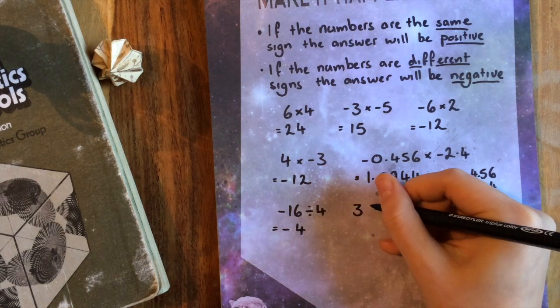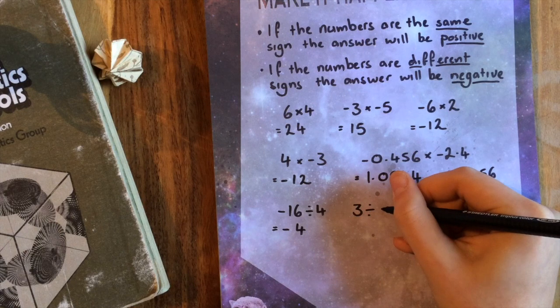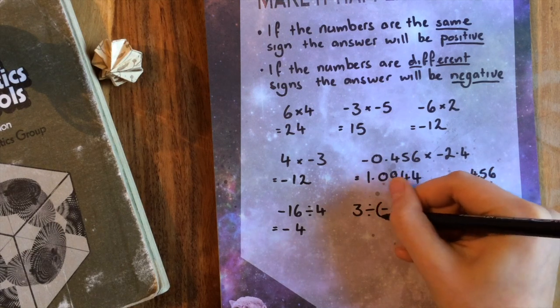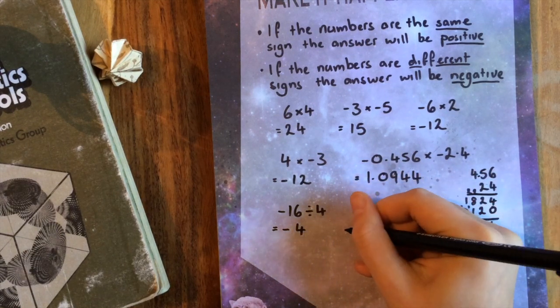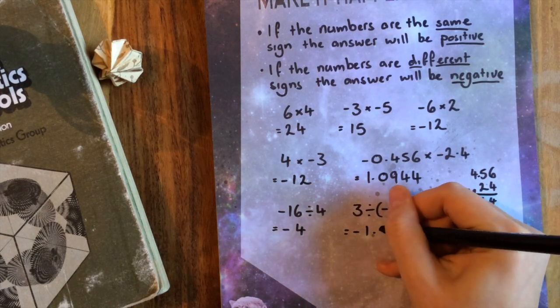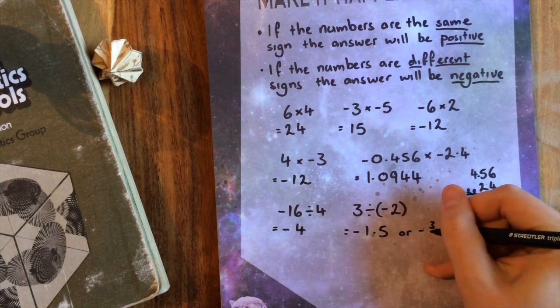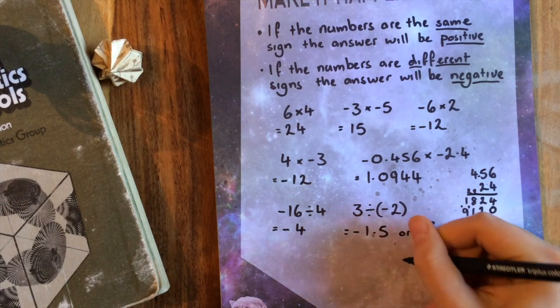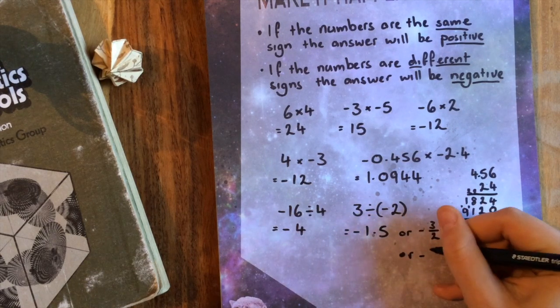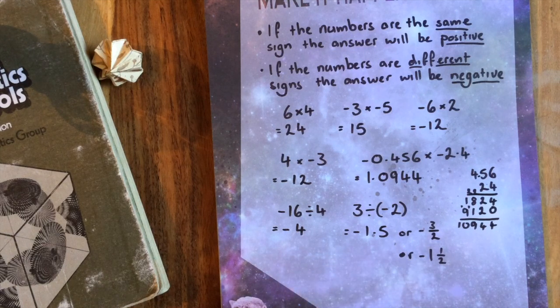Three divided by negative two. Remember, sometimes it could be in a bracket as well. Well, that's going to be negative 1.5, or negative three over two, or negative one and a half, depending on how you like to see your answers. These are all the same numbers. But point remains the same.